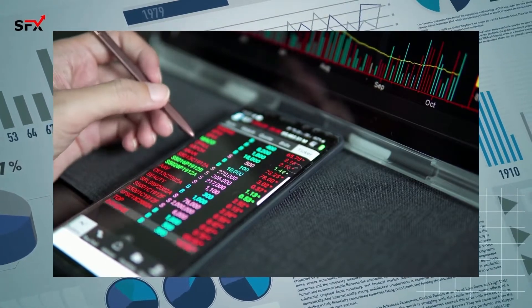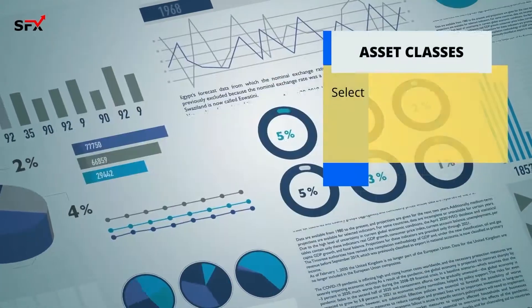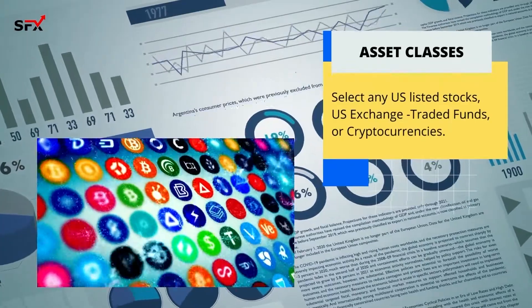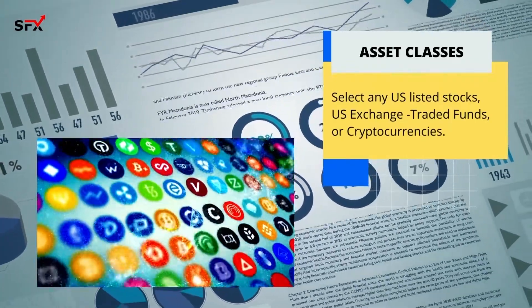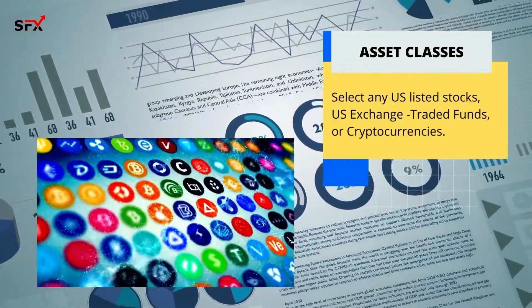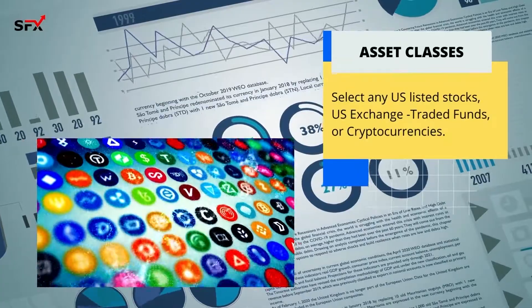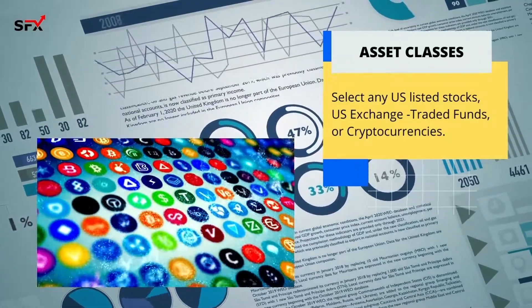To place a trade, it's as simple as clicking the trade button and deciding on what you'd like to trade from a wide variety of U.S. listed stocks and ETFs. They also offer cryptocurrencies including Bitcoin, Ethereum, XRP, and more.